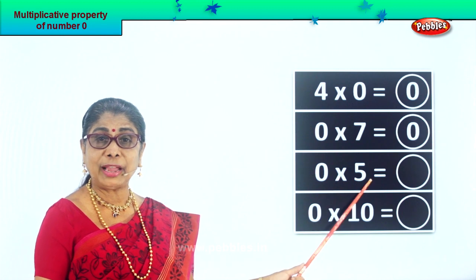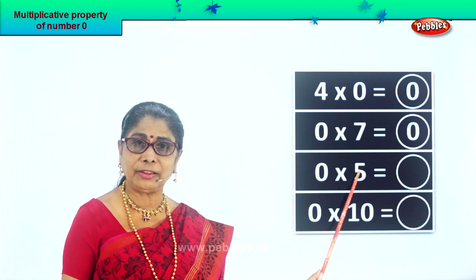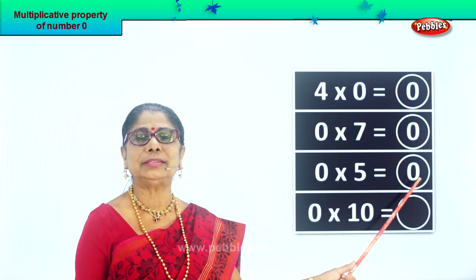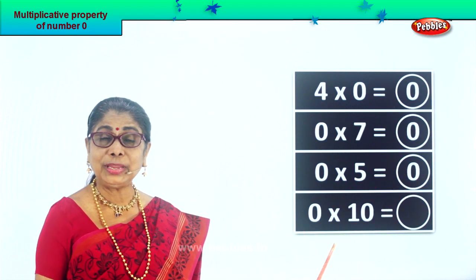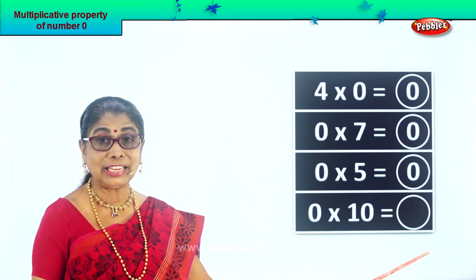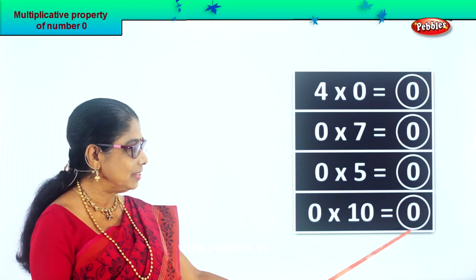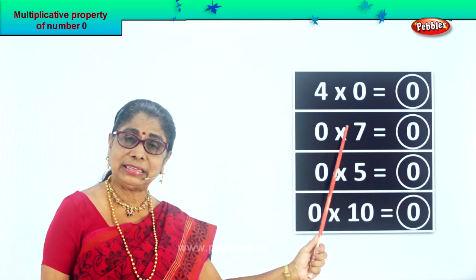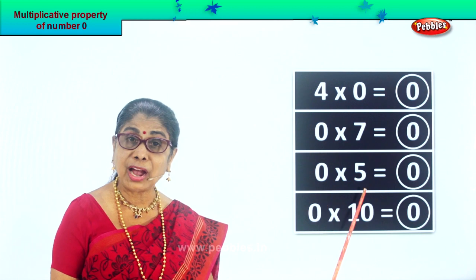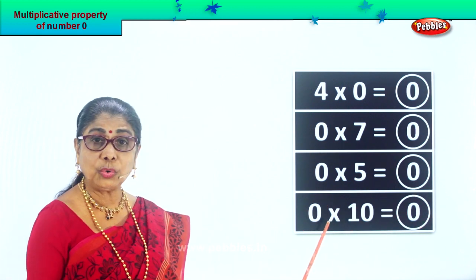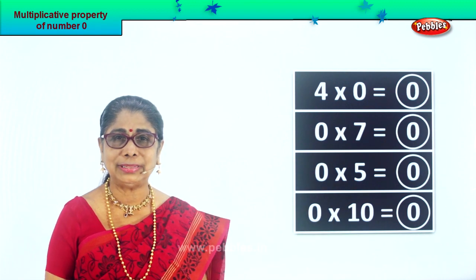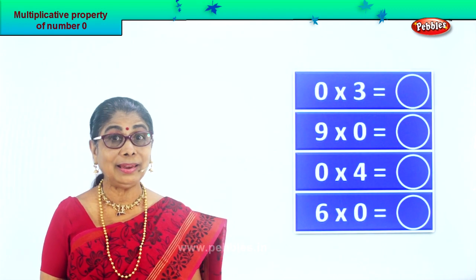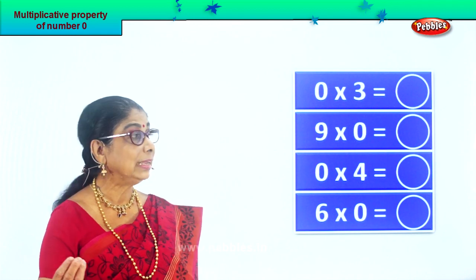Zero multiplied by five — zero into five is equal to — zero multiplied by any number is equal to — good — zero. Finally, zero into ten. Zero multiplied by ten is equal to — good — zero. Did you enjoy this exercise? Shall we take another exercise? We are learning Multiplicative Property of Zero.